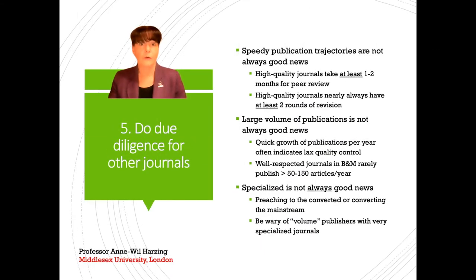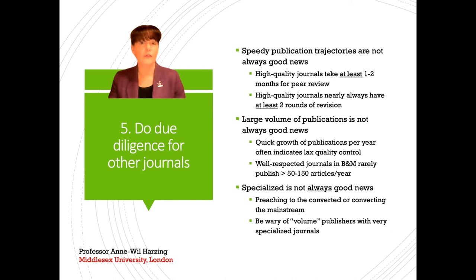Now we've talked about publishing in top journals, looking beyond the ABS ranking, publishing in base and sister disciplines, and publishing in new online open access journals. But that doesn't cover the whole universe of journals — there are many left. For those, I'd suggest doing your due diligence, because within this group there are a huge number of really high-quality journals just below the top journals, but also a large group of low-quality journals, bordering in some cases on predatory journals.